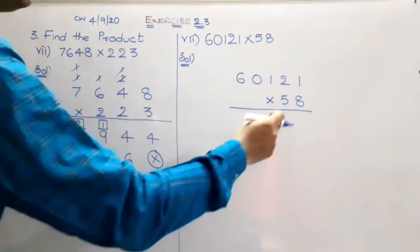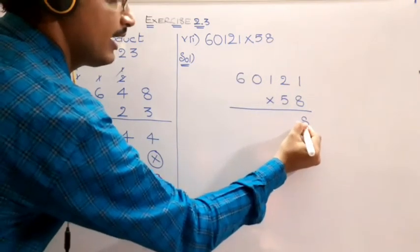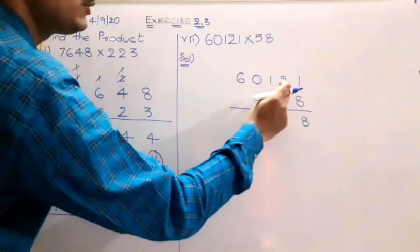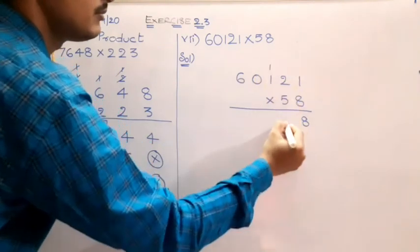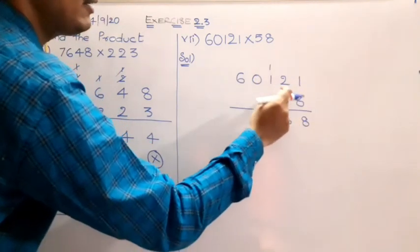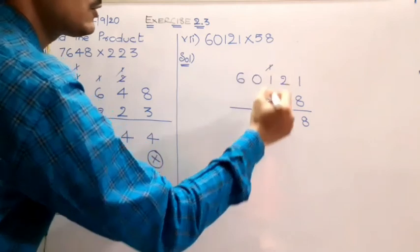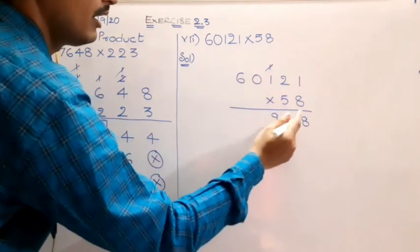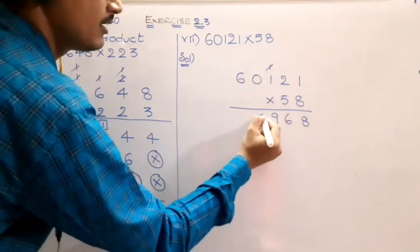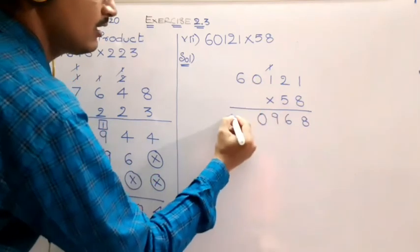So let us start with 8 first. 8 ones are 8. 8 twos are 16. 8 ones are 8. 8 plus 1, 9. 8 zeros, 0. 8 sixes, 48.